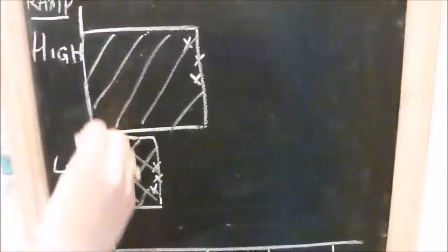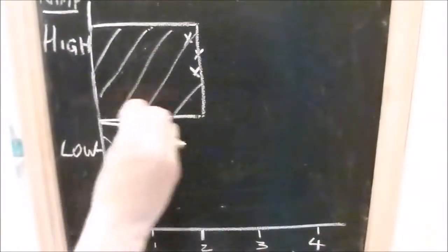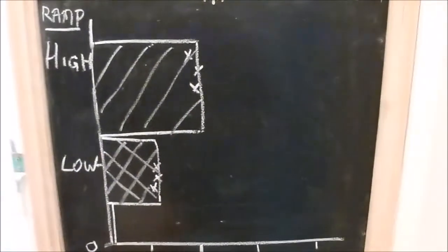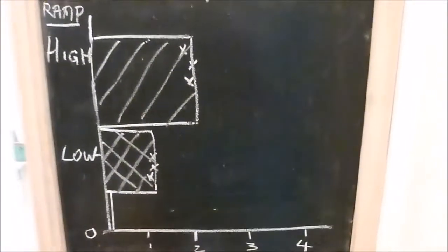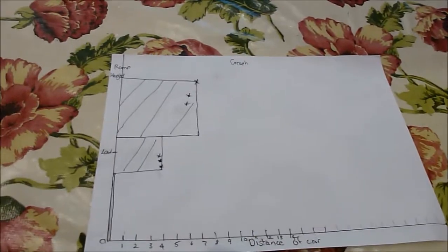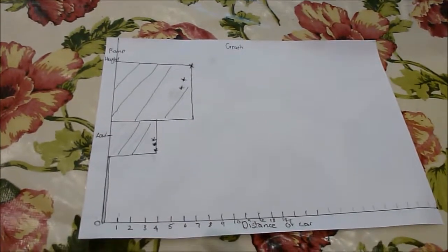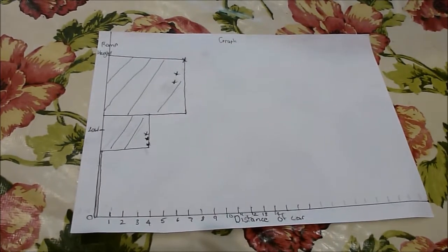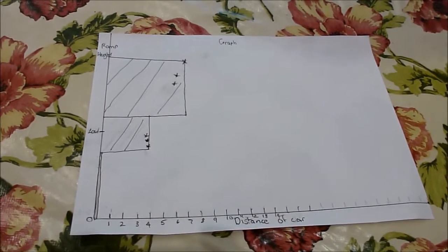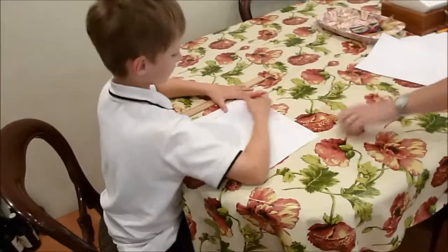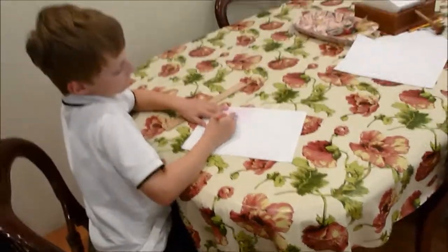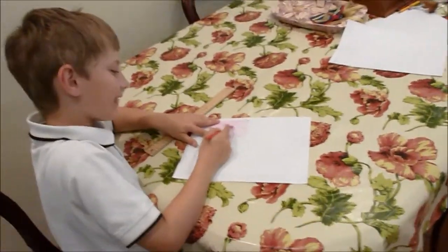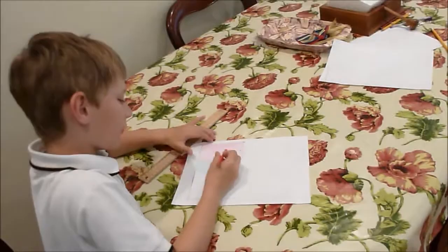Here is the graph that I've drawn on the board to give the children an example. This is the graph that Sam drew, showing the distance of the car and the ramp height. And just explain that you're colouring in the graph now. I am colouring in the graph now to make it more visible.